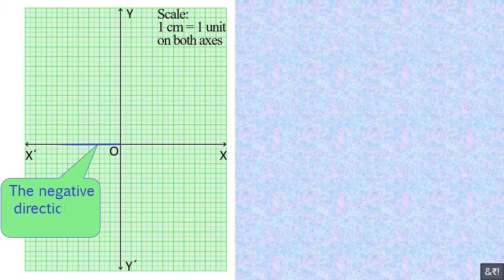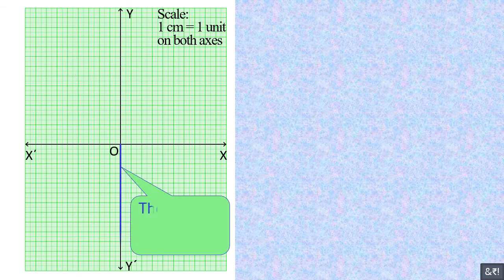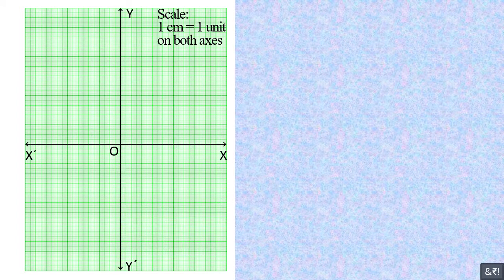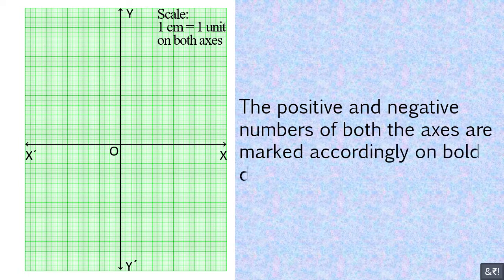The positive direction of the x-axis, the negative direction of the x-axis, the positive direction of the y-axis, and the negative direction of the y-axis are all labeled. The positive and negative numbers of both axes are marked accordingly on the bold divisions.